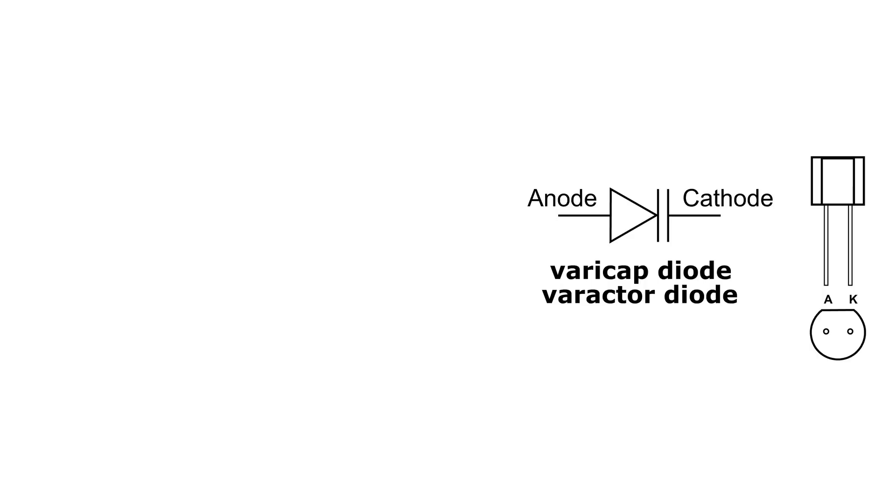On the right side of the drawing, that is the physical drawing of the varactor diode that I have. You can see that the left connection is labeled A, that's the anode, and the other one is labeled K, which stands for the cathode.